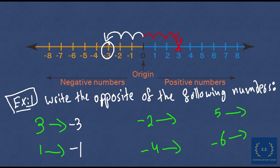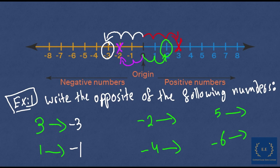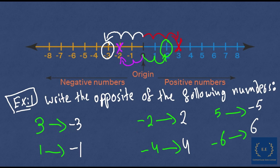Now for minus 2: minus 2 is located 2 spaces to the left of the origin. To find the opposite, I go 2 spaces to the right of the origin, so the opposite of minus 2 is 2. The opposite of minus 4 is 4. The opposite of 5 is minus 5. And the opposite of minus 6 is 6. So what do you notice? The opposite of a positive number is a negative number, and the opposite of a negative number is a positive number.